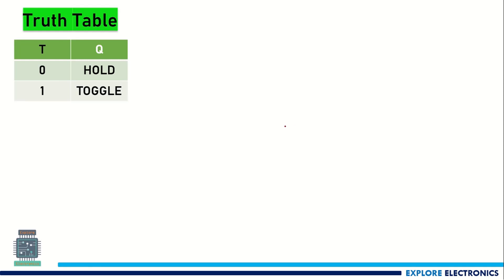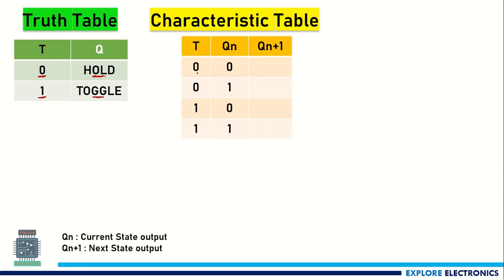Let us look into the T flip-flop now. For T equal to 0, Q holds its value — no change occurs. When T equals 0 and current state is 0, the output holds 0 to the next state. When T equals 0 and current state is 1, the output holds 1 to the next state. These are the hold conditions of the T flip-flop characteristic table.